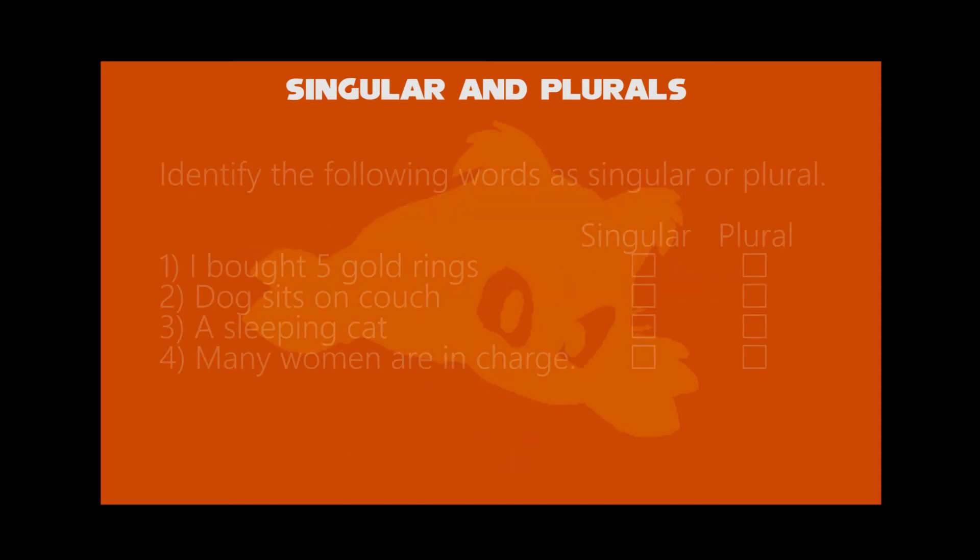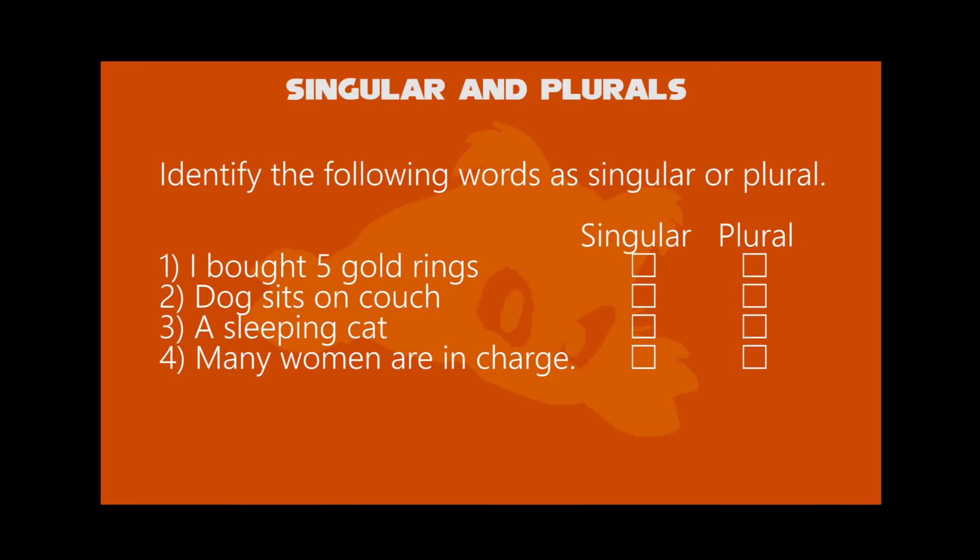Now, we will give you many sentences to indicate the words. First sentence, I bought five gold rings. Guess the word phrase. The phrase is five gold rings, which is plural.